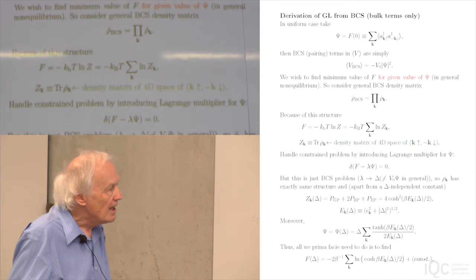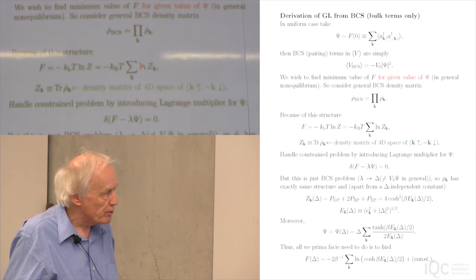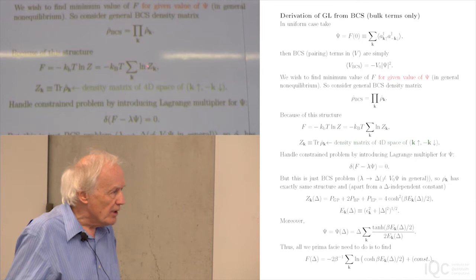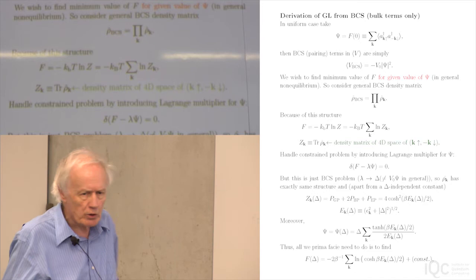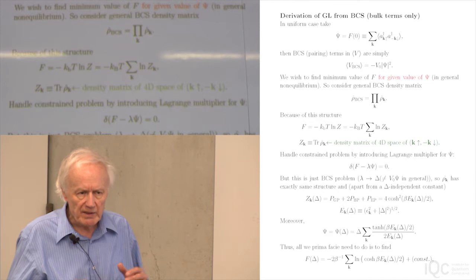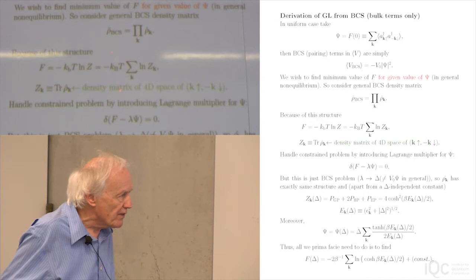The free energy has the nice property of being just the sum of contributions from the different k's. Here comes the crucial point: you can handle the constrained problem. The only constraint is that psi should have some value not necessarily at its equilibrium value. Apart from that, you assume temperature equilibrium. The standard way of handling a problem with constraints is by introducing a Lagrange multiplier — in this case, the Lagrange multiplier is for the quantity whose value you want to fix, which is psi.